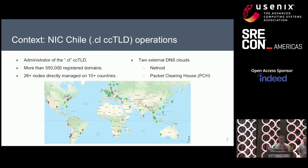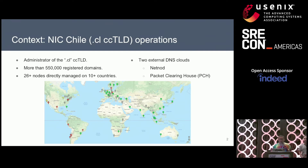A little bit of context: we come from Chile. We work for a top-level ccTLD administrator. NIC Chile is a medium-sized name service administration of top-level domains. We have around 26 to 27 nodes in 11 countries, and we are also operating two anycast clouds and two external DNS clouds. As a mid-size top-level domain operator, we receive around 3,000 queries per second per server.